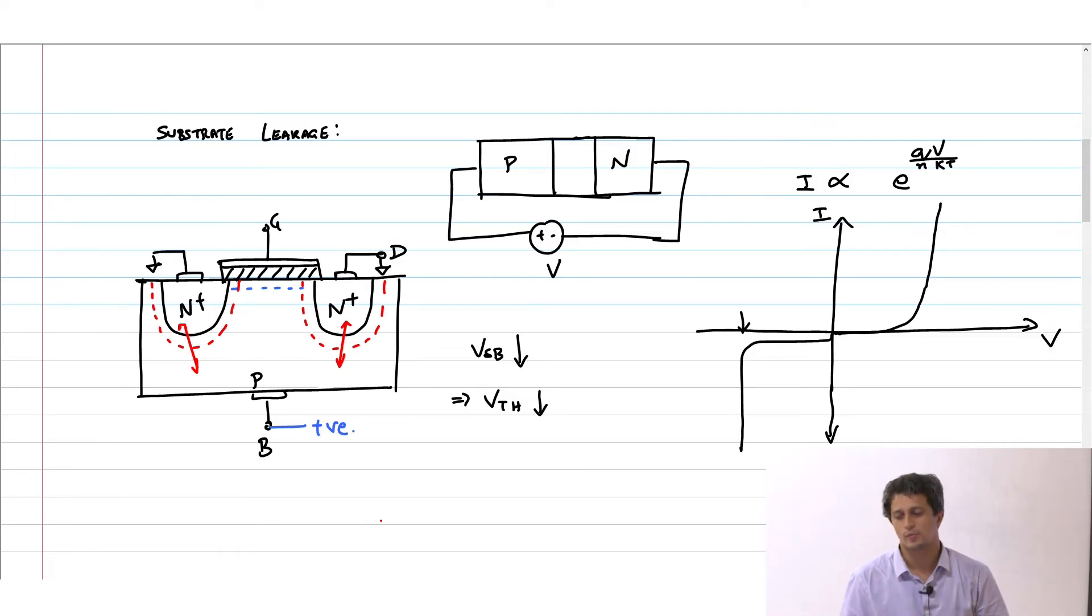There is one PN junction here, another PN junction here. By connecting the body to a positive voltage you are forward biasing that junction. What does forward biasing the junction mean? It means there is an exponential increase in current. If you are slightly increasing it maybe 10 millivolt, 20 millivolt, maybe even 100 millivolt, be prepared for the extra leakage that is going to come about.